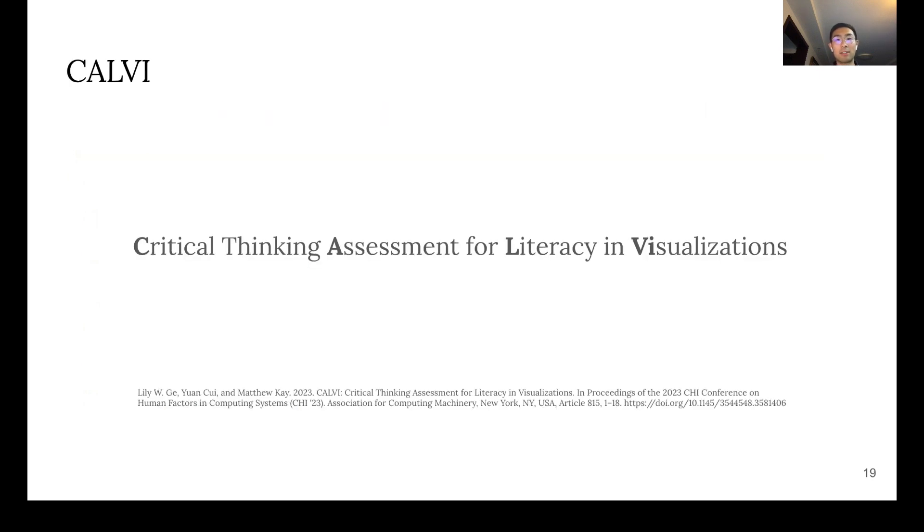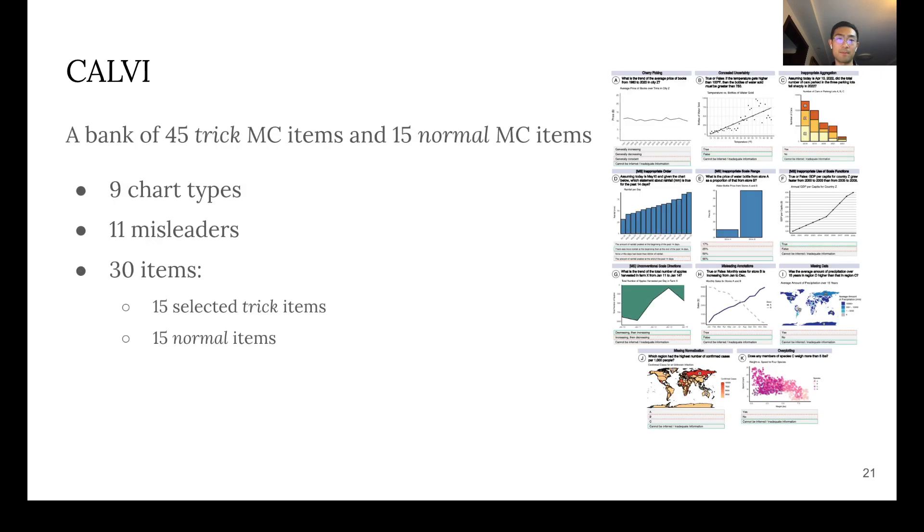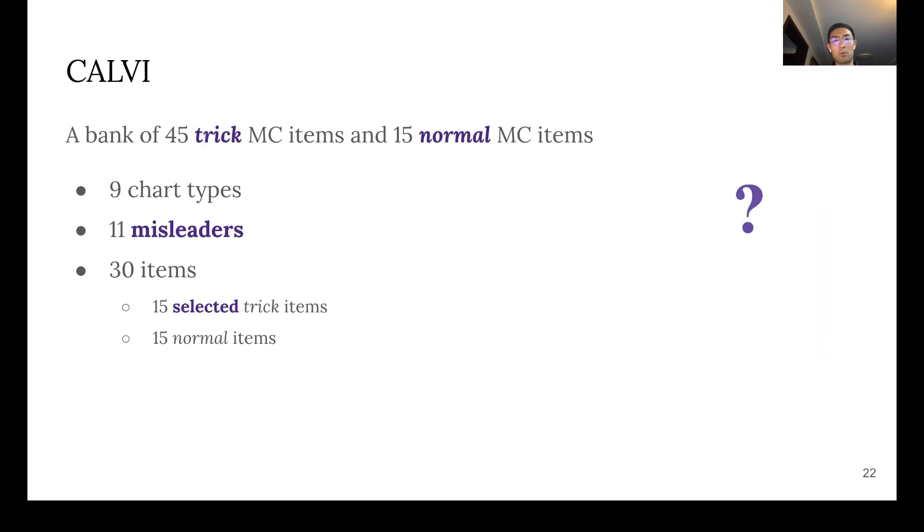Next up, Ge et al. developed CALVI in 2023 in order to measure the critical thinking ability of detecting visualization misinformation. The authors of CALVI developed a bank of 45 trick items and 15 normal items. The trick items cover 9 chart types and 11 misleaders, and the actual test of CALVI contains 15 selected trick items and 15 normal items.